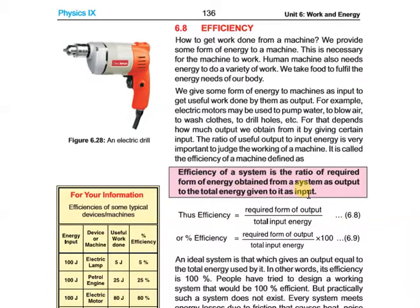Efficiency is basically the ratio of the required form of energy we want from a system to the total energy we are giving to it as input. For example, we give a machine electrical energy, and it does useful work for us — that is its efficiency.